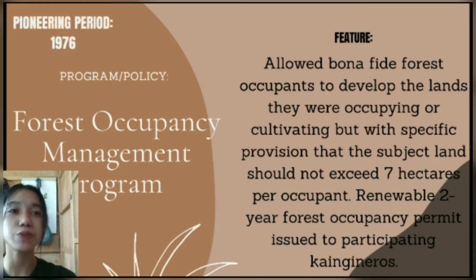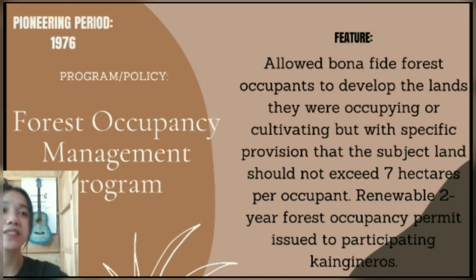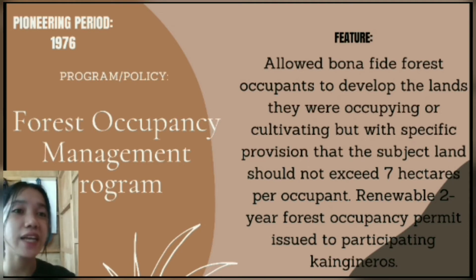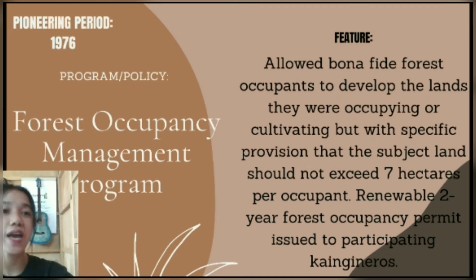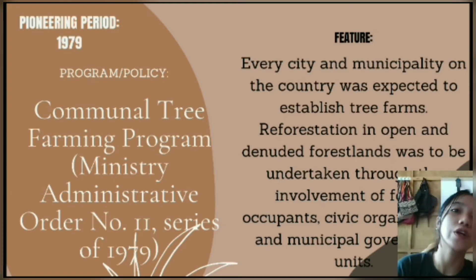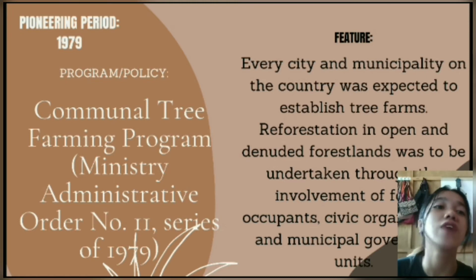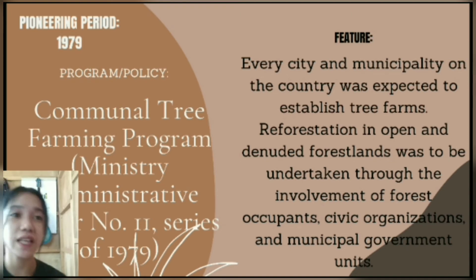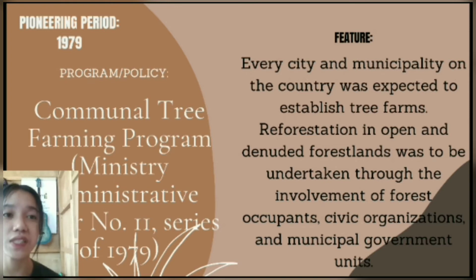In 1976, the Forest Occupancy Management Program allowed bona fide forest occupants to develop lands they were occupying or cultivating, with the specific provision that the subject land should not exceed seven hectares per occupant, with a renewable two-year forest occupancy permit issued to participating occupants. In 1979, the Communal Tree Farming Program, Ministry Administrative Order Number 2, Series of 1979, expected every city and municipality to establish tree farms; reforestation of open and denuded forest lands was to be undertaken through the involvement of forest occupants, civic organizations, and municipal government units.